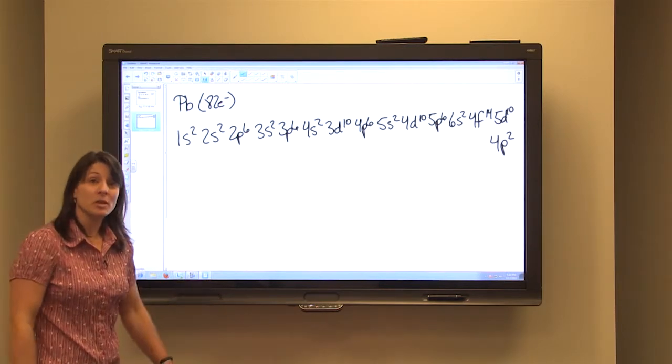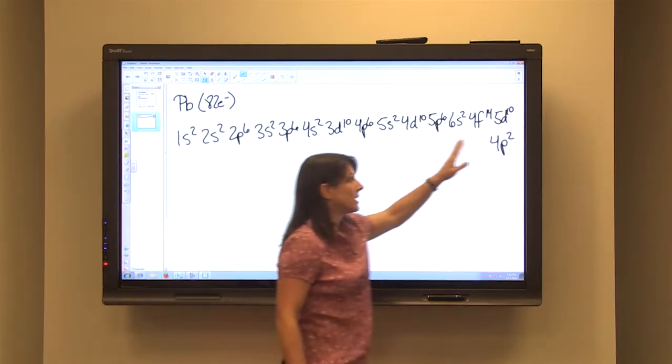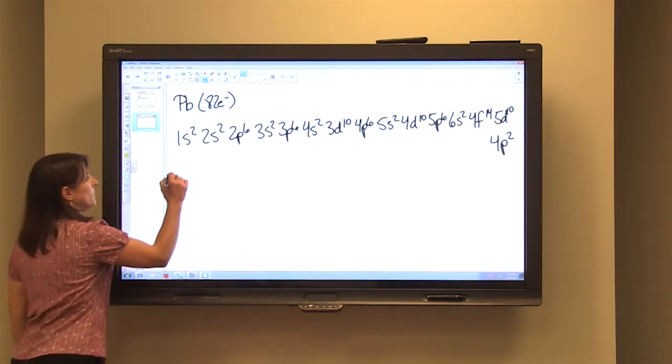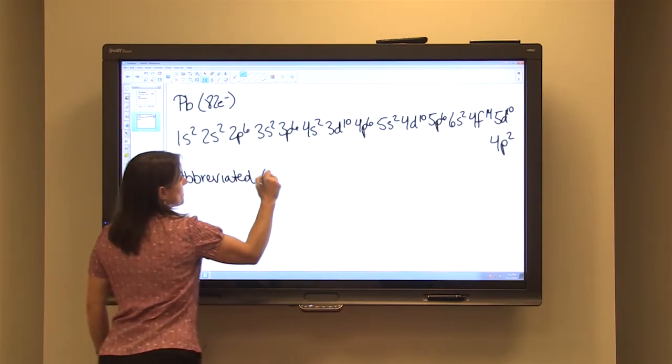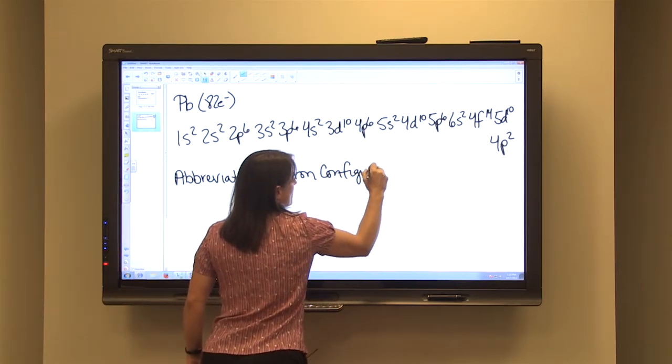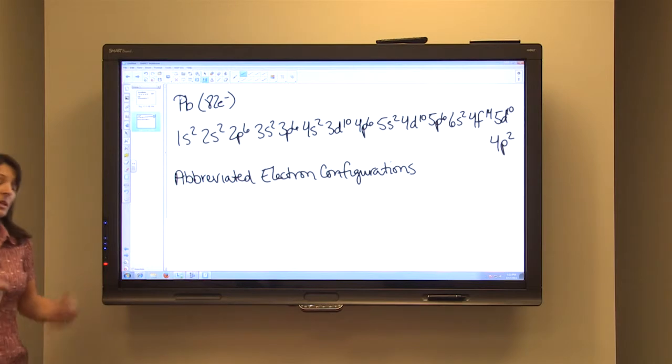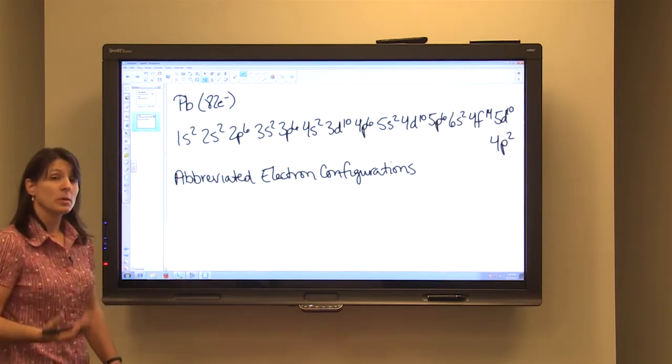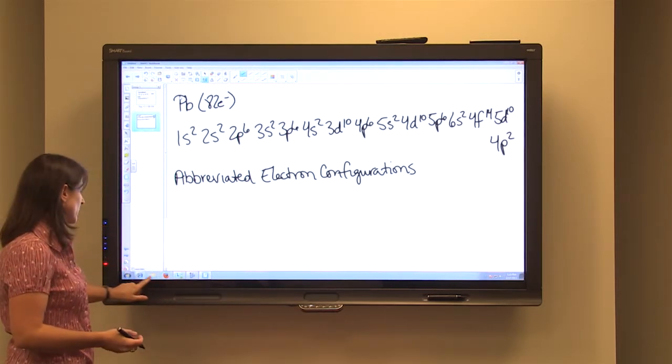As you can see, it gets very long the more electrons we have. To double check, you would just add up all your superscripts again and make sure that it equaled 82. So for lead, this is a great example to talk about abbreviated electron configurations. Abbreviated electron configurations help you to write the electron configurations in a more concise way.